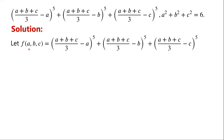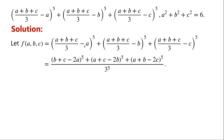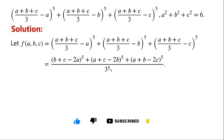We let F of A, B, C equal the given algebraic expression. The term minus A can be written as minus 3A over 3, so the first term can be written as (B plus C minus 2A) to the power of 5 over 3 to the power of 5. Similarly, by symmetry, the second and third terms can be written as (A plus C minus 2B) to the power of 5 over 3 to the power of 5, and (A plus B minus 2C) to the power of 5 over 3 to the power of 5, respectively.